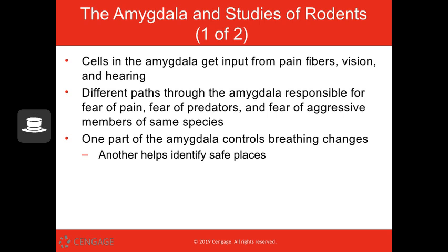You're being chased by a swarm of bees: you hear the buzz, one stings you, and you can see the swarm moving towards you. Your amygdala is taking all this information and helping you decide what to do. The things crossing through the amygdala help you process your fear of pain, your fear of predators, or your fear of aggressive members of the same species. Your amygdala also controls breathing changes and helps identify safe places. Changing your breathing — also related to heart rate — prepares you to move quickly, like running from a scary lion or murder hornets.